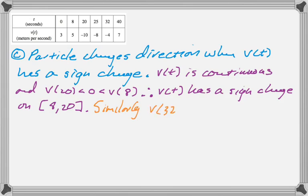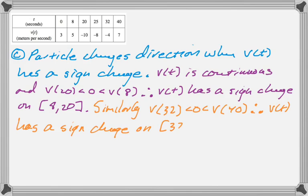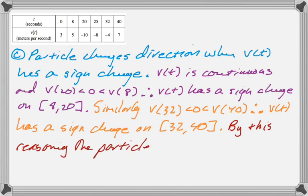Similarly, we'll do the same thing between 32 and 40, so V(t) has to have a sign change somewhere on that interval from 32 to 40. And, by this reasoning, we know for sure that the particle changed directions twice.